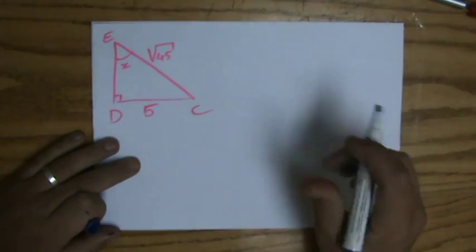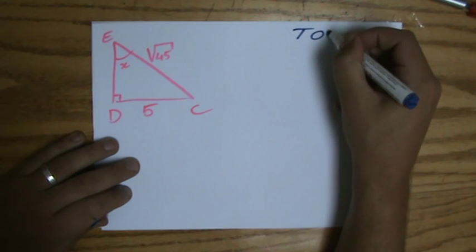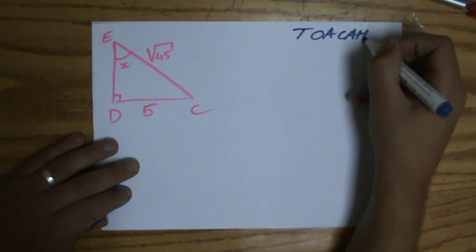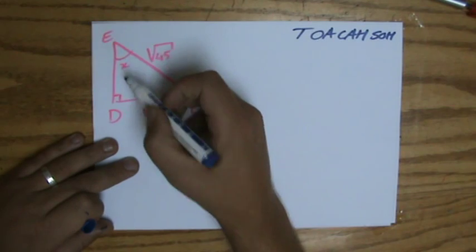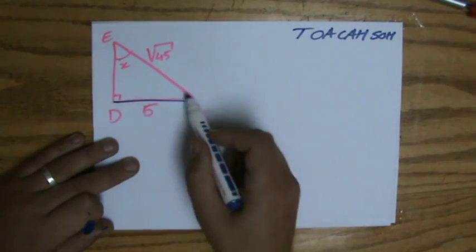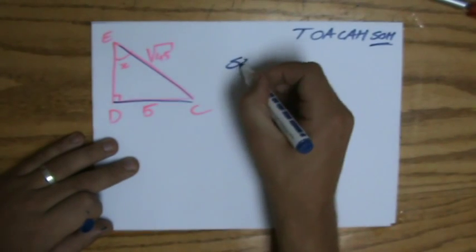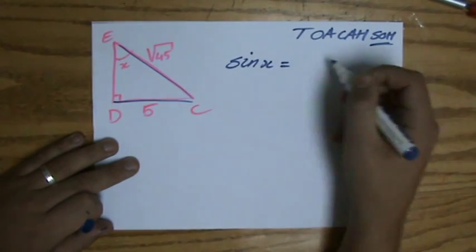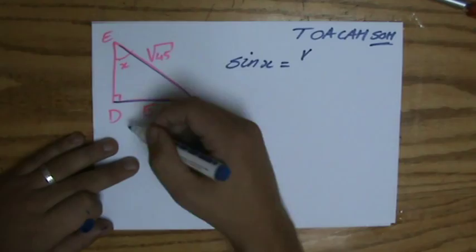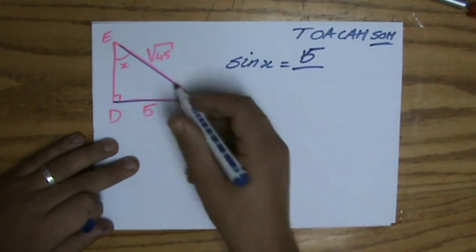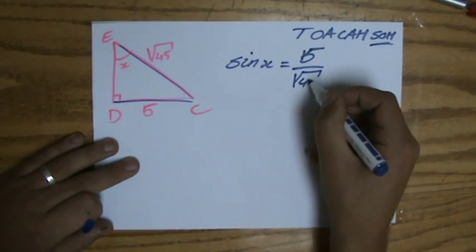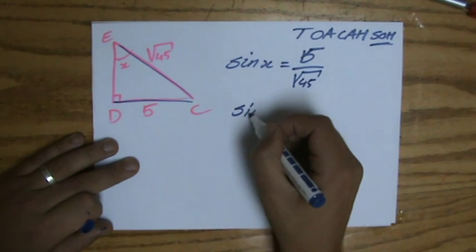Once you have constructed that right angle triangle, because that's really the hardest decision you have to make, then it is fairly straightforward. SOHCAHTOA. In my angle we're talking about the opposite and the hypotenuse, so that is the sine. The sine of x equals opposite, so 5 divided by the hypotenuse square root of 45.